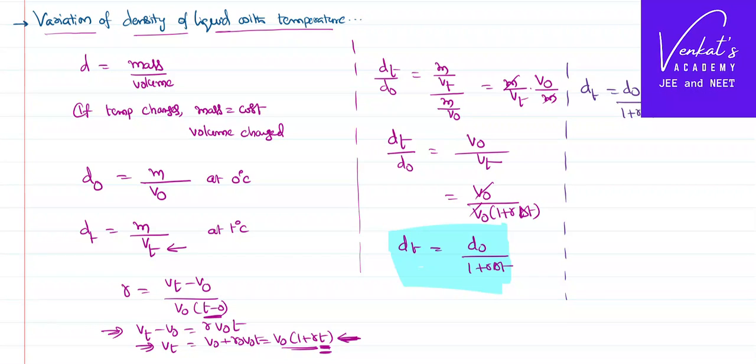We can further write DT as D0 by 1 plus gamma delta T. To rationalize that, we multiply with 1 minus gamma delta T and divide by the same. So we get D0 times 1 minus gamma delta T divided by, this is a plus b times a minus b, that is a square minus b square.